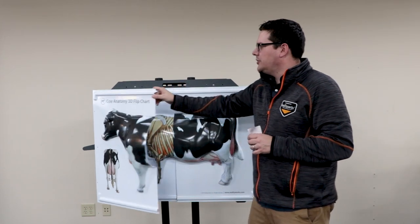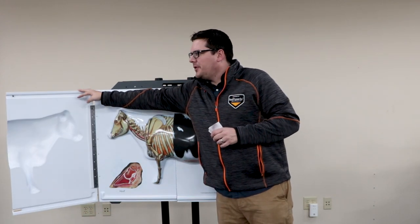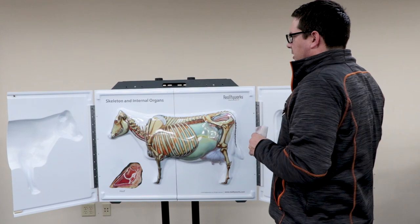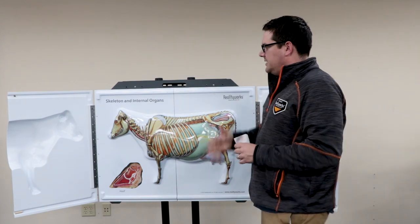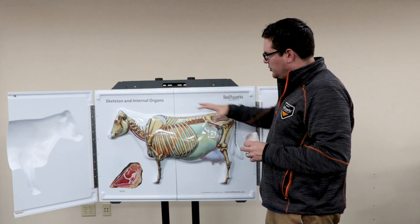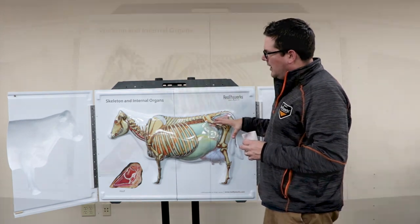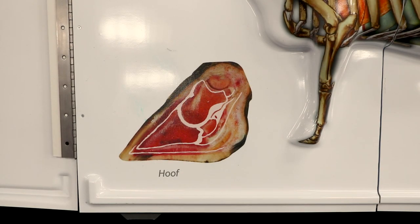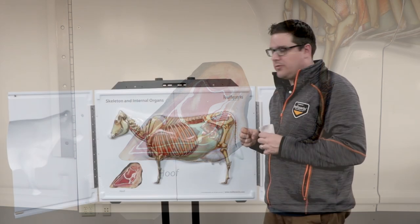Then all I have to do is flip open the chart, and you see the skeleton and internal organs — the next layer of cow anatomy — being able to show students what is going on with the skeleton and where the different internal organs are placed. We also have a hoof as a call-out, being able to see the bone structure and help students understand how important hoof care really is.